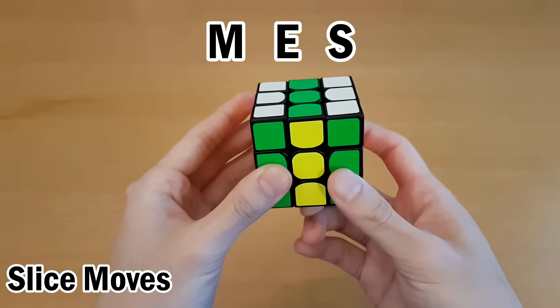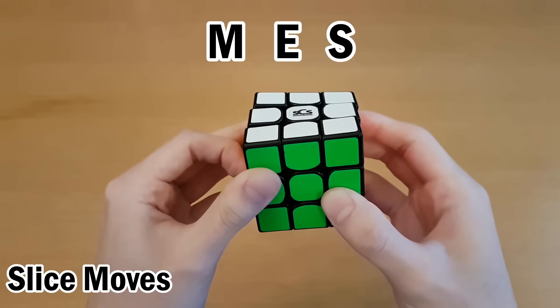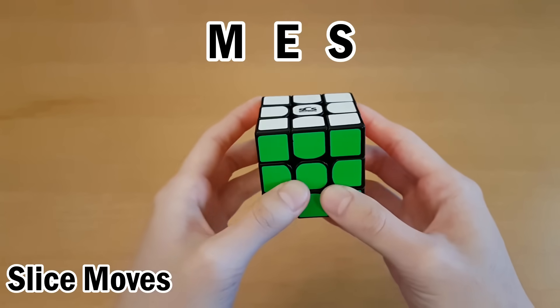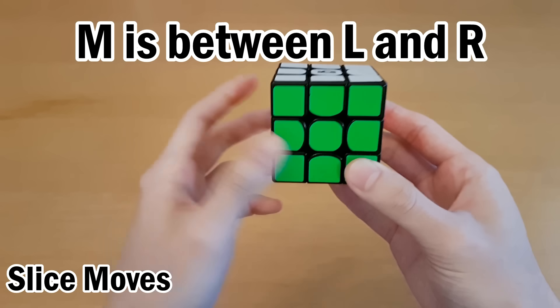Next we have the slice layers, this being the M layer, this being the E layer, and this being the S layer. For these ones you can't just face it and turn clockwise, so instead the logic is you follow the same direction as the one nearest to it in the alphabet. For example,